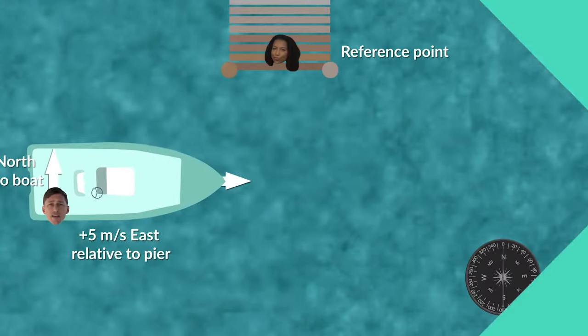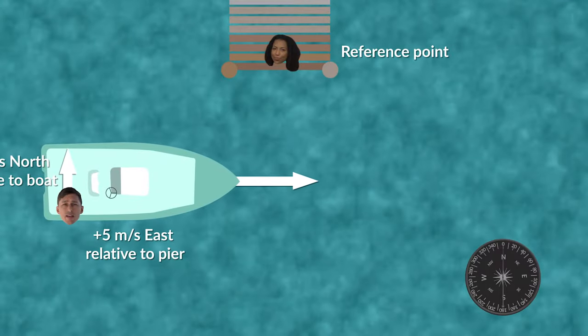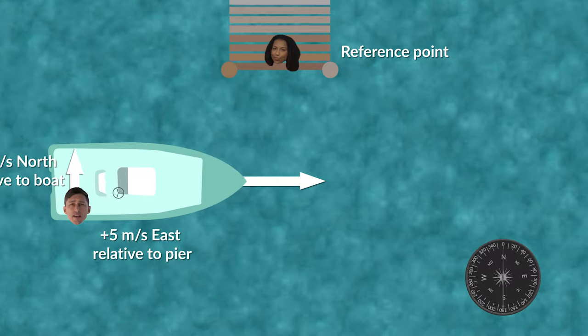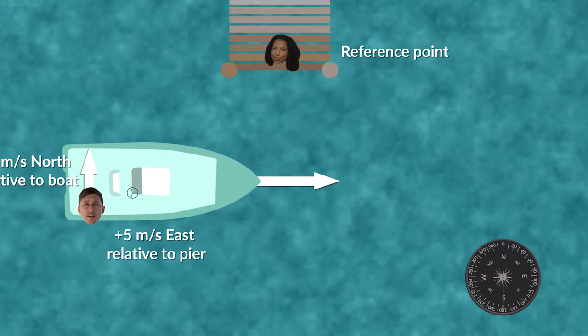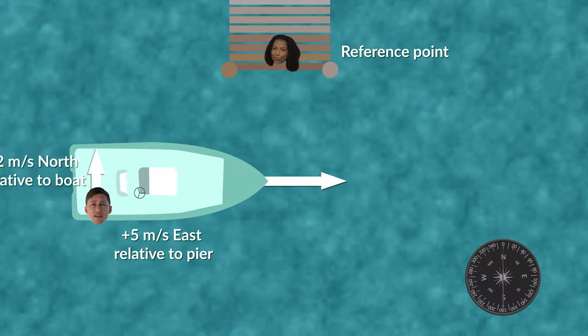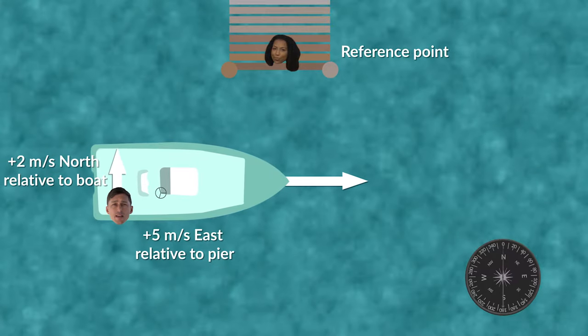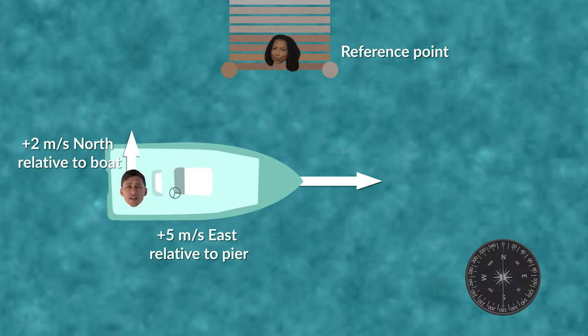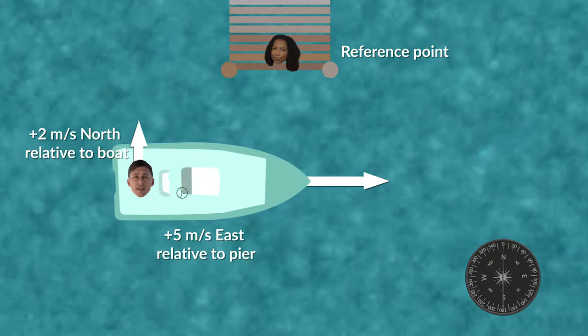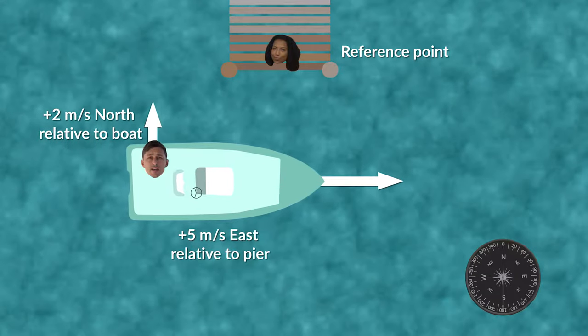That was a relative velocity problem in which all movement was in one dimension. Let's work through a problem in which the movement is in two dimensions. This boat is traveling east at 5 meters per second. Let's say I walk going north across the deck of the boat at 2 meters per second this time. What's my velocity relative to the boat? Let's draw it out — it's simpler than you think.